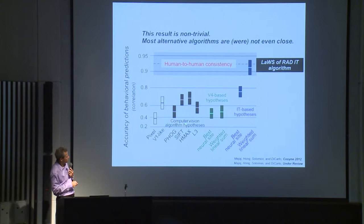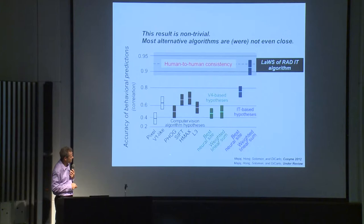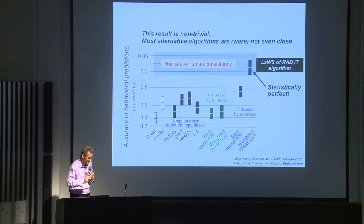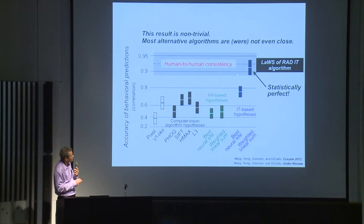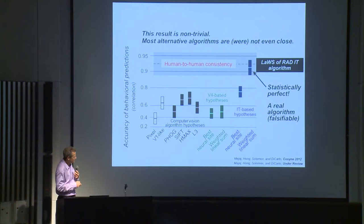This algorithm is passing our Turing test — we cannot distinguish this algorithm from another human being on the same kind of test. A bunch of computer vision algorithms, pixels, V1, other representations using simple decoders, do not produce this result. Neural data from the input level to IT also do not. So this is not just saying there's a correlation somewhere in the brain. This is a statistically precise algorithm predicting what humans do, and it's real — there are parameters here, a claim that can be falsified.